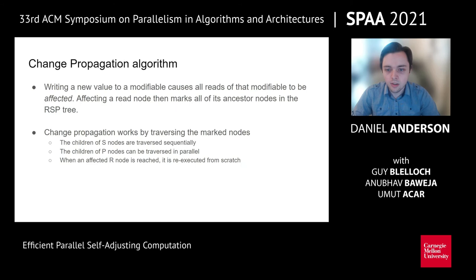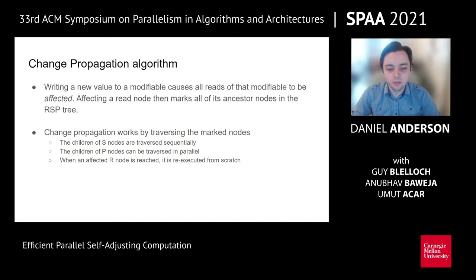Our change propagation algorithm takes new values to modifiables and updates the output. When you write a new value to a modifiable, all read nodes that read it are marked as affected, and their ancestor nodes in the RSP tree are marked. Change propagation then traverses the marked nodes. When traversing past an S node, children are traversed sequentially. At a marked P node where both children are marked, they can be traversed in parallel. When an affected read node is reached, it is re-executed from scratch, which may write to more modifiables, affecting new read nodes and marking further nodes in the tree.